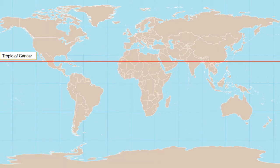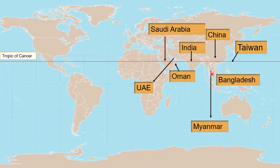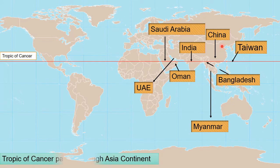Talking about the Asia continent, there are eight countries: Saudi Arabia, India, China, Taiwan, Bangladesh, Myanmar, Oman and UAE.